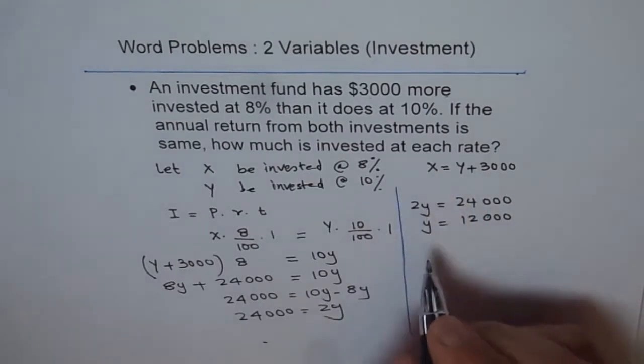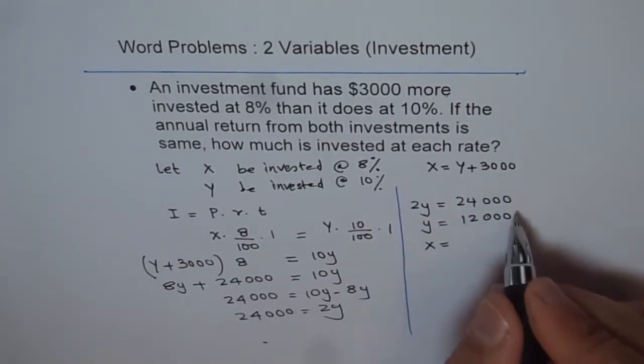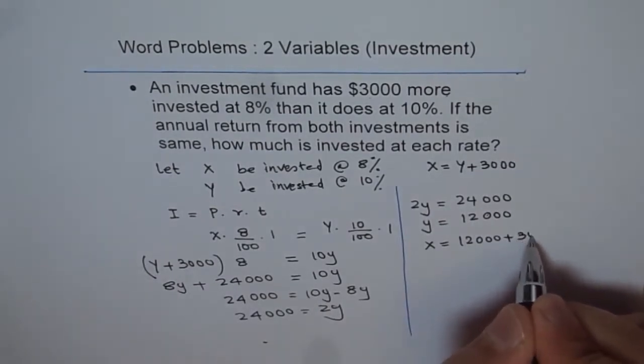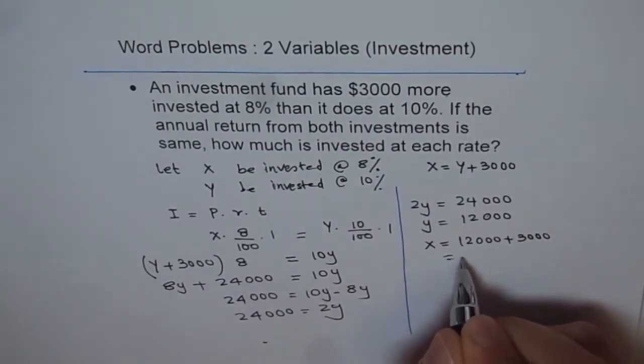If Y is 12,000, what is X? X is 3,000 more. So this is 12,000 plus 3,000, which is 15,000.